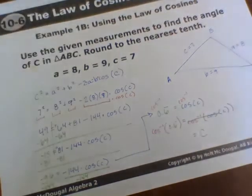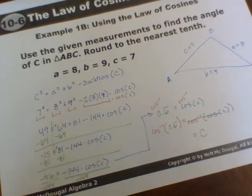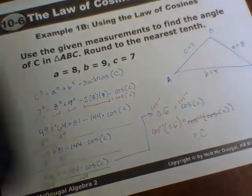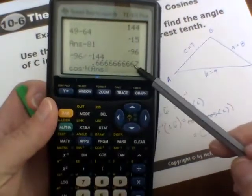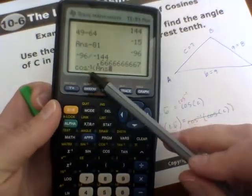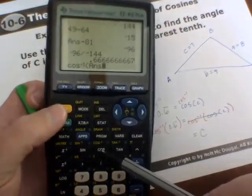But then cosine inverse of 0.6 repeating. So what I do is have the 0.6 repeating on my calculator and do cosine inverse from second cosine.